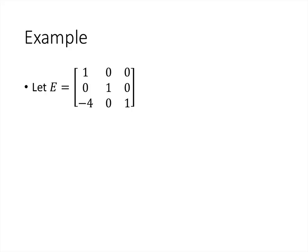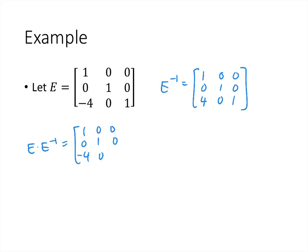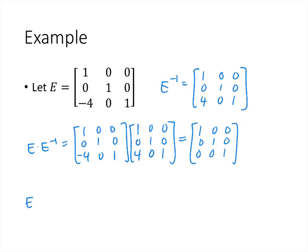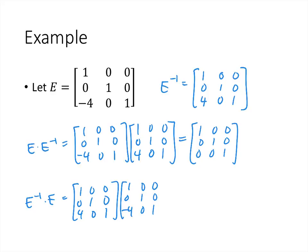For example, if E is the elementary matrix obtained by replacing row 3 by negative 4 times row 1 plus row 3, then the inverse would be the opposite row operation — replacing row 3 by positive 4 times row 1 plus row 3. We can verify this by multiplying in both orders and checking that we get the identity matrix, with 1s on the diagonal and 0s everywhere else. Indeed, both multiplications give the identity.